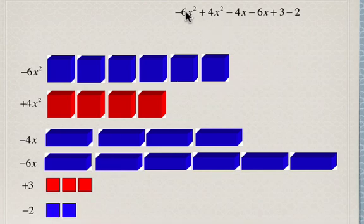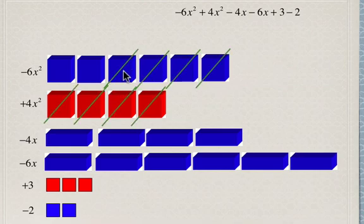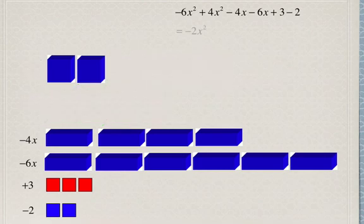So now we're going to combine the like terms. Negative 6x squared plus 4x squared — each of these red cubes, which is positive 1x squared, and each of these blue cubes, which is negative 1x squared, are going to cancel each other out and become zero. So four blue cubes are going to cancel out four red cubes, and we're going to be left with negative 2x squared, because each of these represents negative 1x squared, so two of them is going to be negative 2x squared.